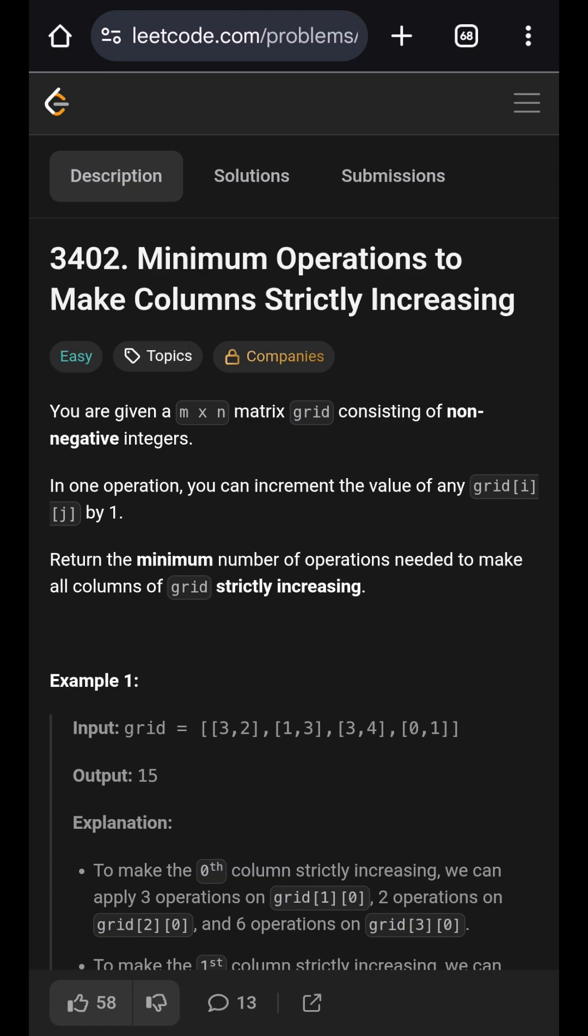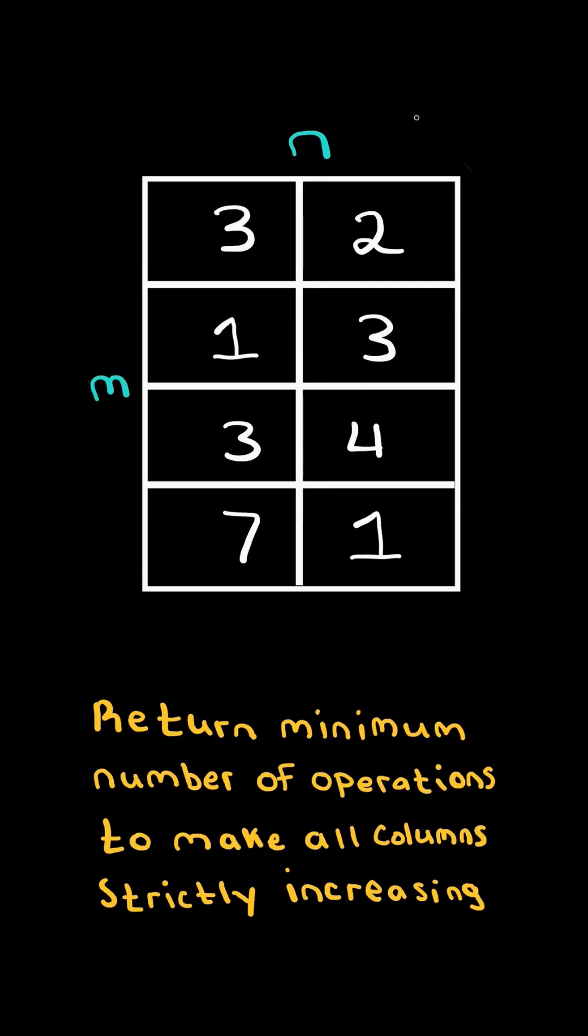Minimum operations to make columns strictly increasing. Return the minimum number of operations needed to make all columns strictly increasing.